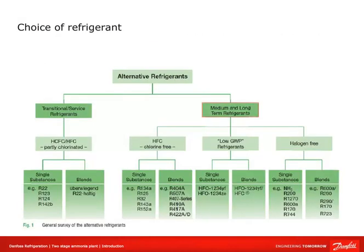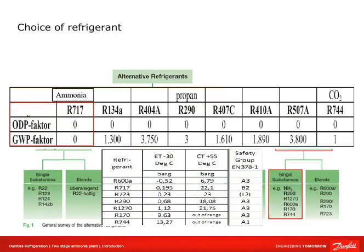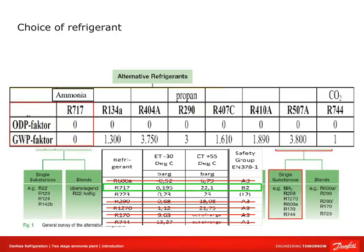Looking at alternative refrigerants, medium and long-term refrigerants are expected to be used for longer periods without new restrictions. Halogen-free refrigerants are the most straightforward and can be used for many years without restrictions. Considering environmental impact, refrigerant R717 — ammonia — has no ozone depletion potential and no global warming potential, making it an excellent choice. Considering safety groups, A3 is toxic and flammable while A1 is very good but out of range for standard products. This leaves us with ammonia and R723. R723 is a mixture of 60% ammonia and 40% dimethyl ether, but it is not as cheap as ammonia, leaving only ammonia — well-priced and in the B2 safety group.